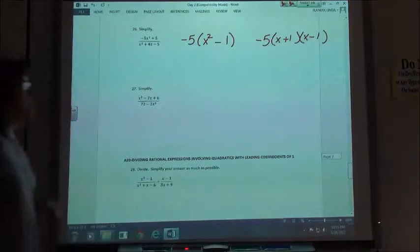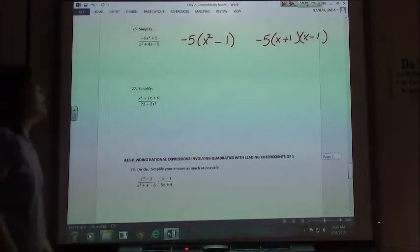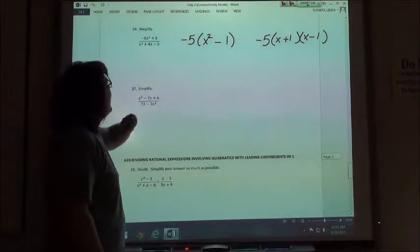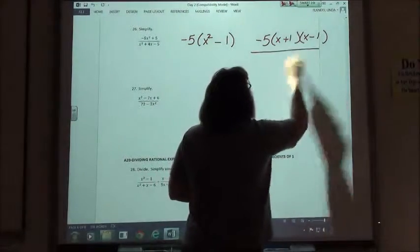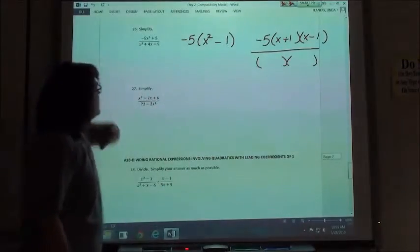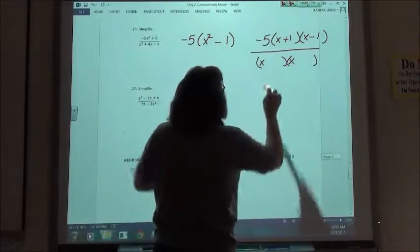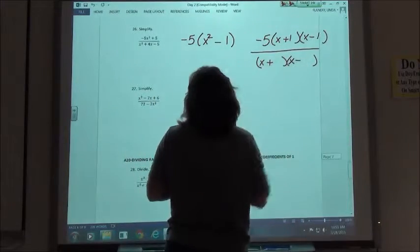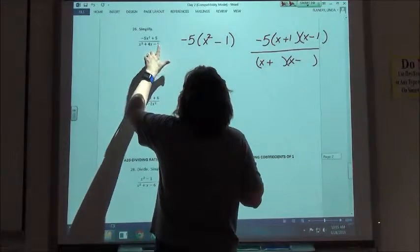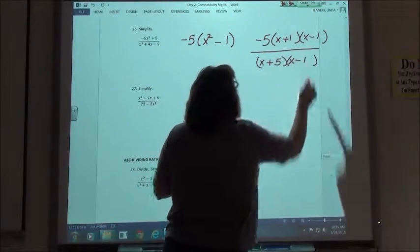So we're going to go ahead and factor that. That factors into x plus 1 and x minus 1. Factors of x squared, x and x, factors of 1, 1 and 1, we have to have a plus and a minus. Bottom of that expression does not have a greatest common factor, so we just go ahead to factoring it out by foiling. Factors of x squared, x and x, the end is negative so we know we have a plus and a minus. Factors of 5, we want a positive 4, so we have to have a plus 5 and a minus 1.